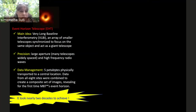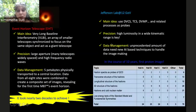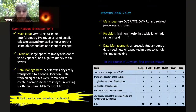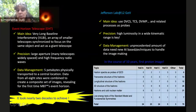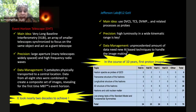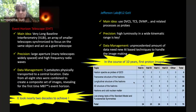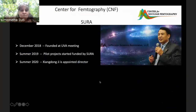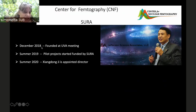For us at Jefferson Lab 12 GeV, the main idea is to coordinate all experiments: DVCS, TCS, DVMP, and related processes. We need precision, high luminosity, and a wide kinematic range. There's also an unprecedented data management challenge requiring new artificial intelligence-based techniques for image-making. Over the course of 10 years, we will accomplish the first proton image — that is my view.